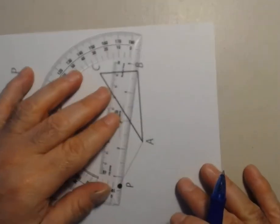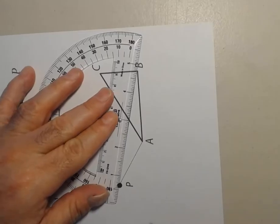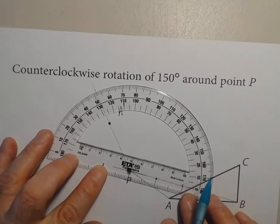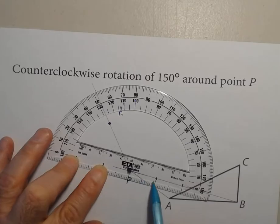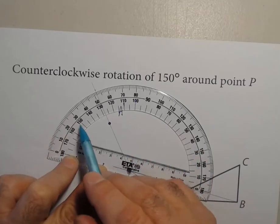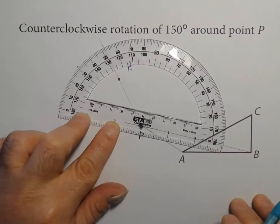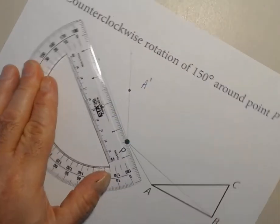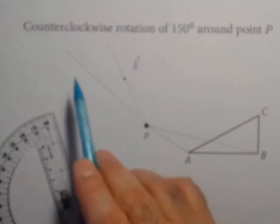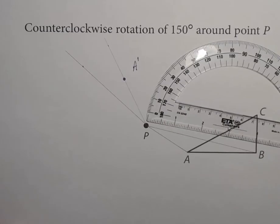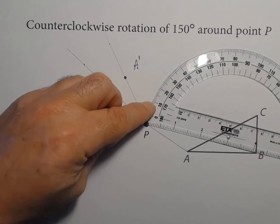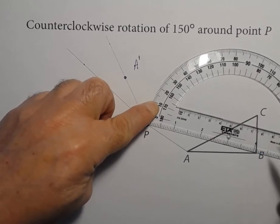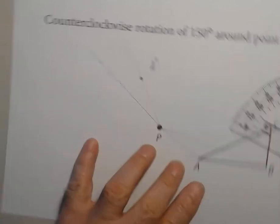Let's do point B next. I'm going to draw a line from point P to point B — that becomes our base ray of the angle. I'll line up my vertex on point P with the crosshair on the line segment we just drew, and find 150 degrees right here. I'll mark that and connect point P to that point with a light line. I need to measure the distance from P to point B, which is two little ticks past four — those larger ticks are eighths — so four and one-eighth inches from point P.